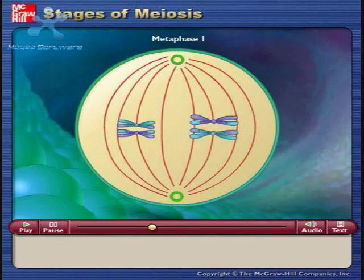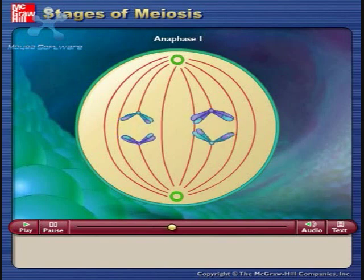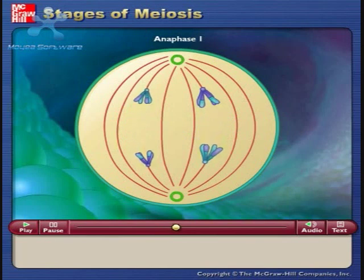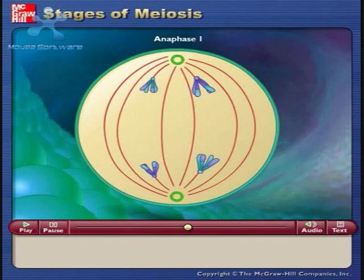Either maternal or paternal homologue may orient toward a given pole. In anaphase I, the microtubules of the spindle fiber shorten and pull the chromosomes toward the poles, taking both sister chromatids with them. Each pole ends up with a complete haploid set of chromosomes consisting of one member of the homologous pair.